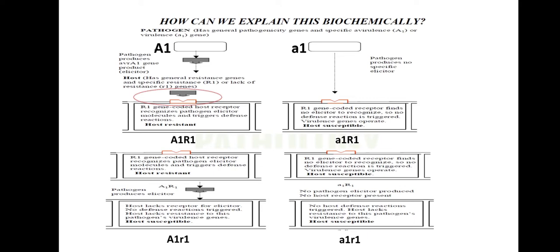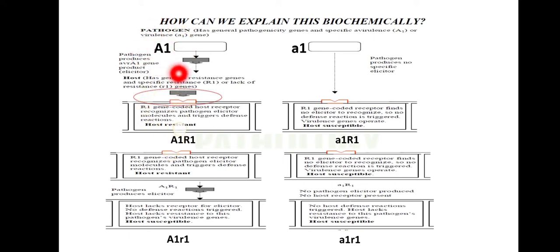In plants, two conditions exist: capital R1 meaning it has a resistance gene or receptor to recognize the effector molecule, and small R1 meaning the plant lacks the receptor or R gene. Similarly in the pathogen, capital A1 means AVR — producing an effector recognizable by the R gene — whereas small A1 means virulent — not producing an effector recognizable by the R gene.